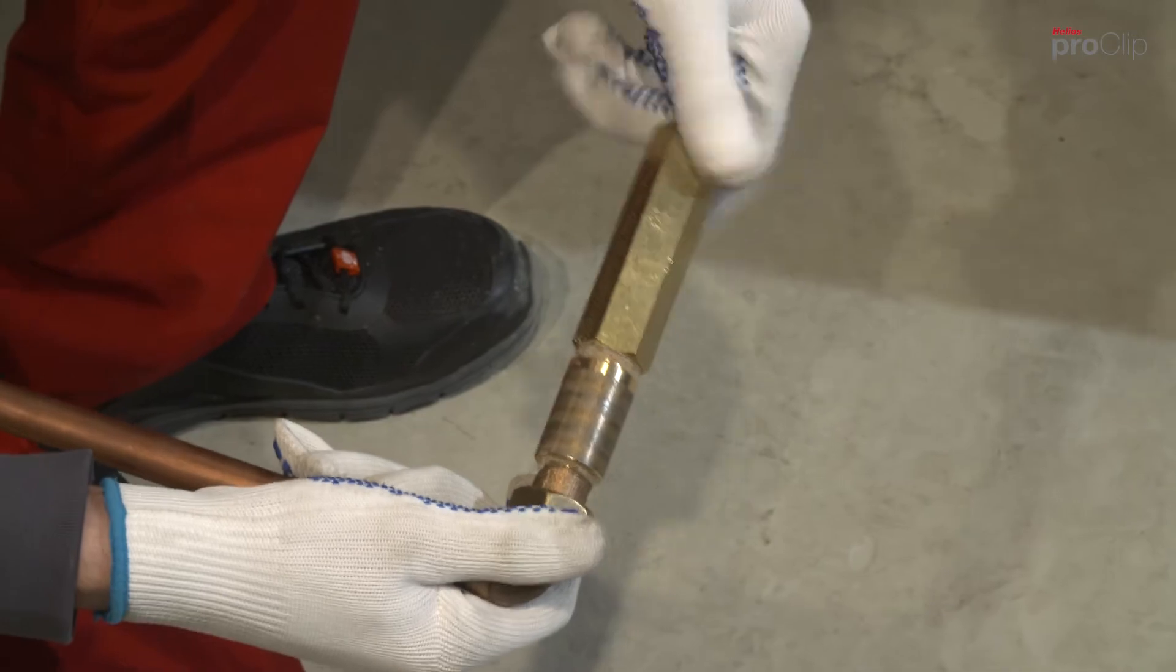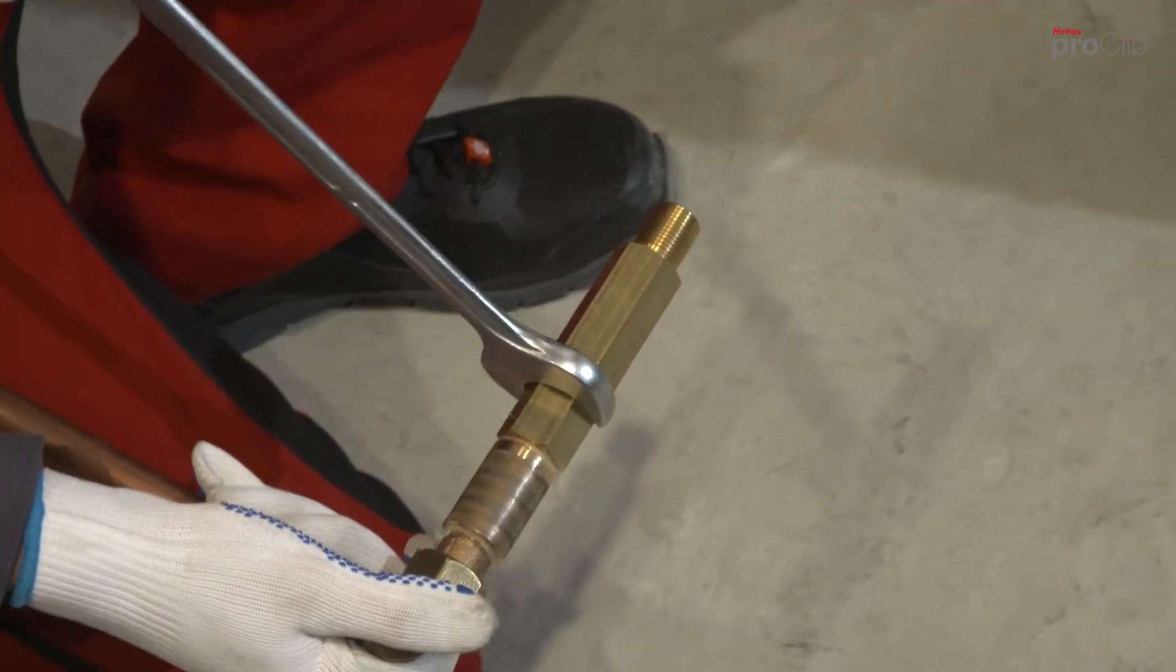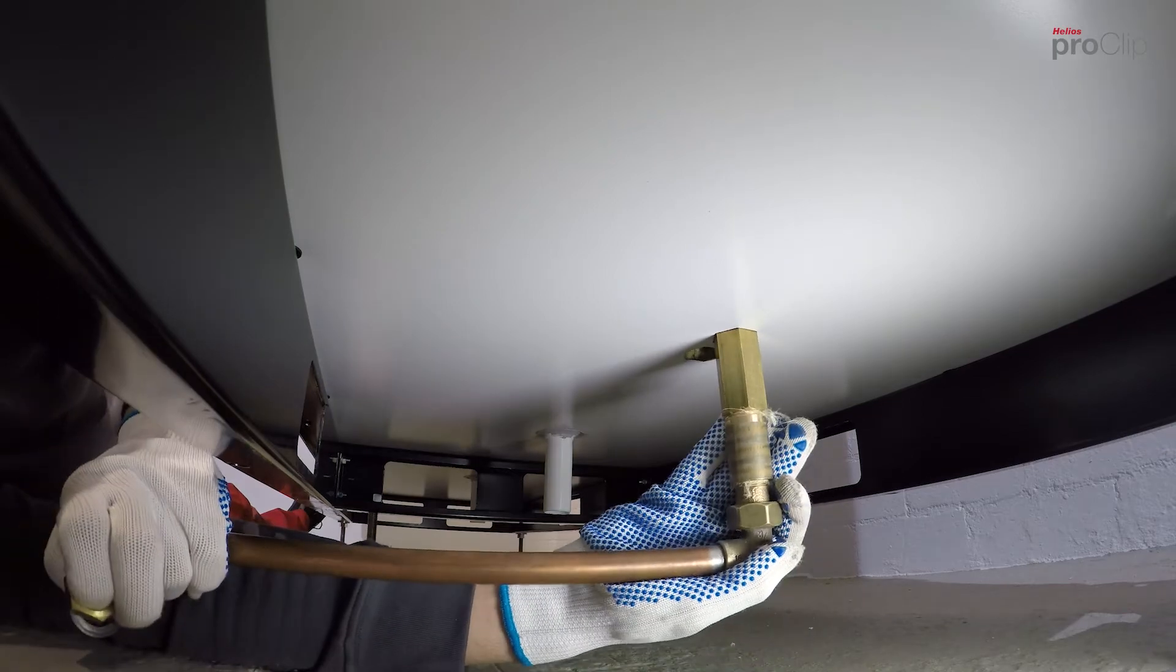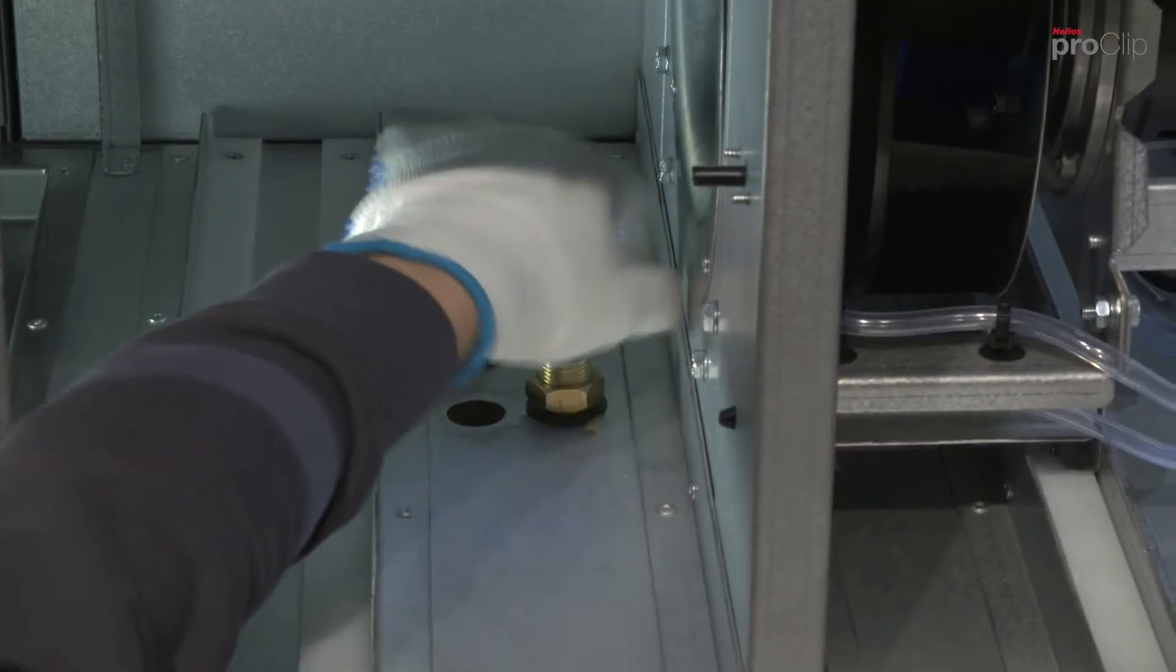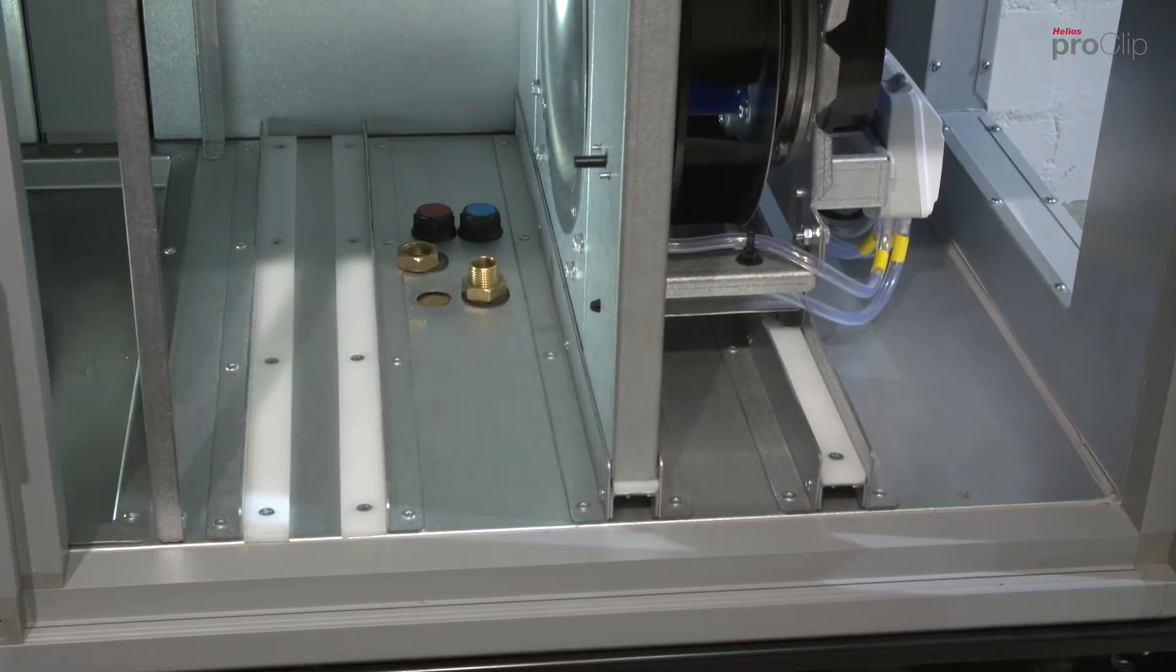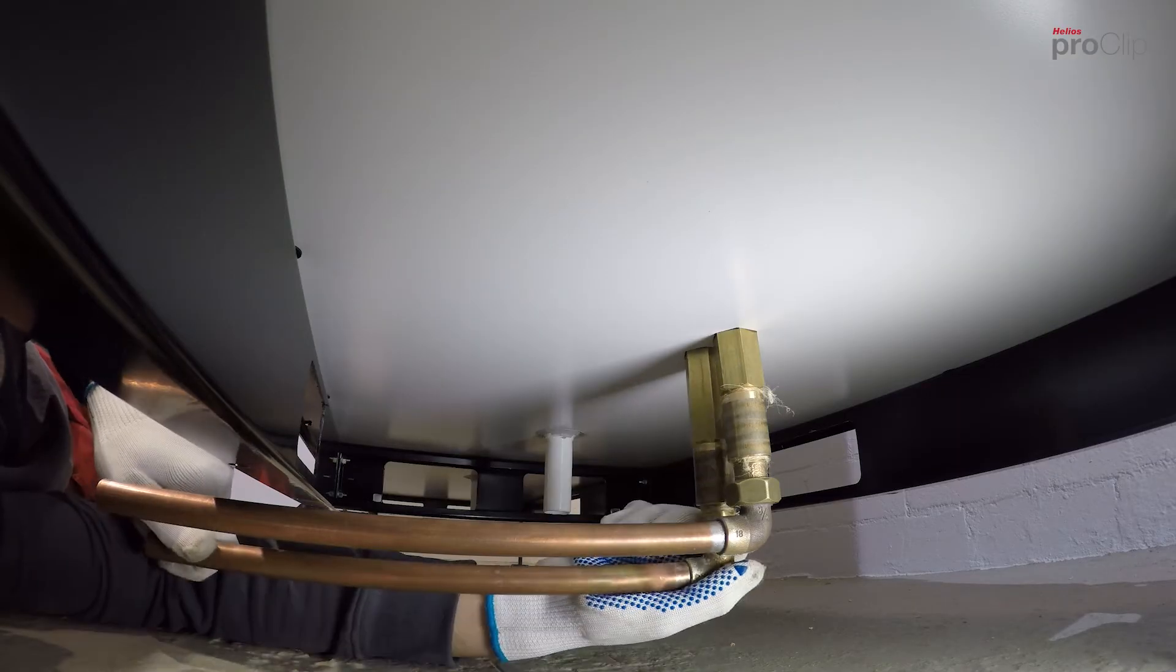Now connect the prepared elbow connections to the connectors for the flow and return. Then reinstall the connectors to the unit. Ensure that the heating pipes are aligned with the desired unit side.